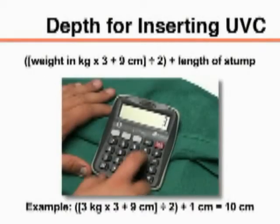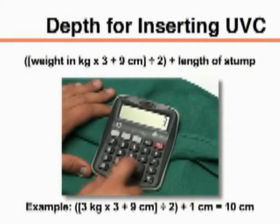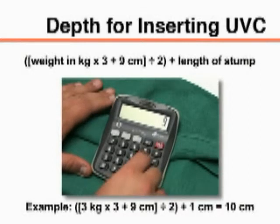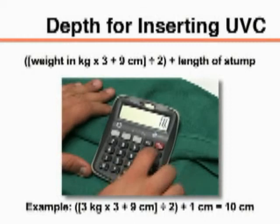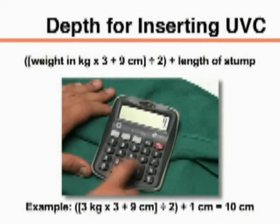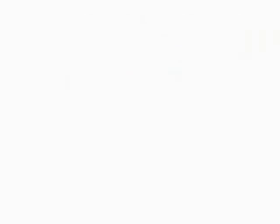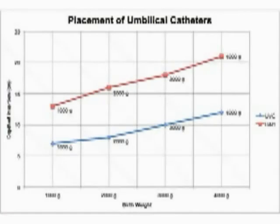To calculate the appropriate depth for the umbilical vein catheter, or UVC, insertion, multiply the weight in kilograms by 3 and add 9 centimeters, divide that total by 2, then add 1 centimeter. Standardized graphs for determining the depth of catheter insertion are available and are included in the supplement.